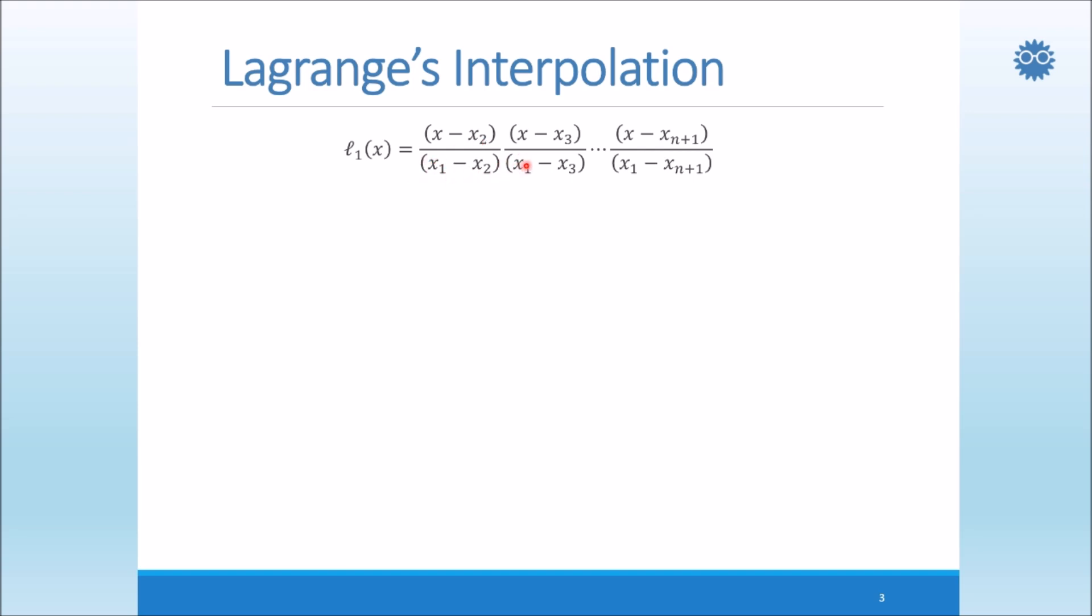We don't have the term of x minus x1 over x1 minus x1, because if we have that term, the denominator will have 0, because it will be x1 minus x1, and the whole right-hand side or the whole product will be infinity, and that will give us wrong results. So we go in this idea.